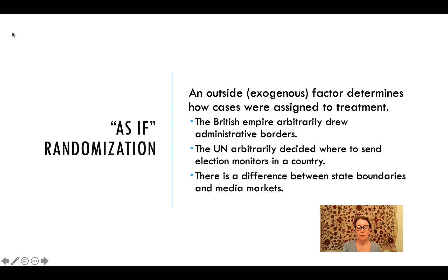Some examples that have been used in political science include the British Empire arbitrarily drawing administrative borders, the United Nations arbitrarily deciding where to send election monitors within a country, or when there is a disconnect between state boundaries in the United States and media markets.